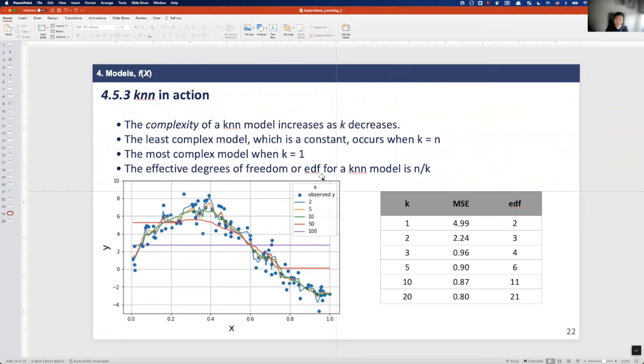And the effective degree of freedom, or EDF, for KNN model is N divided by k. So EDF here is a measure of model complexity. It is approximately the number of parameters that are estimated in the model.